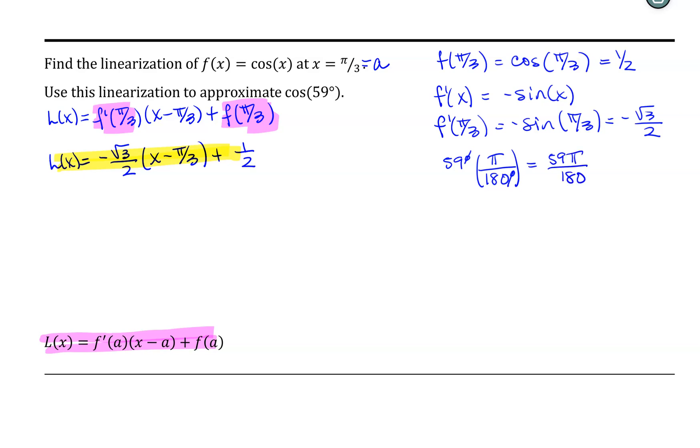So now, when we use our linear approximation, we need to use 59π/180 radians rather than 59 degrees. What we can say then is that cos(59°) is approximately equal to the linearization evaluated at 59π/180.